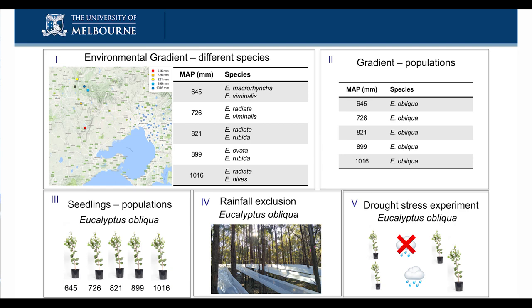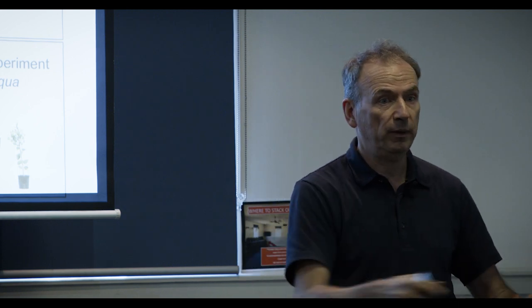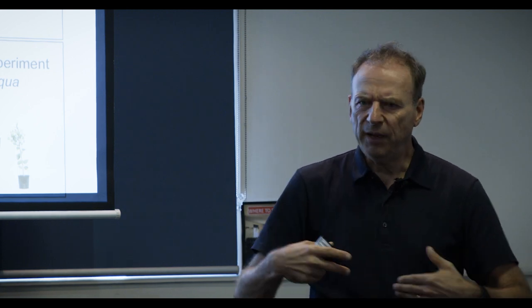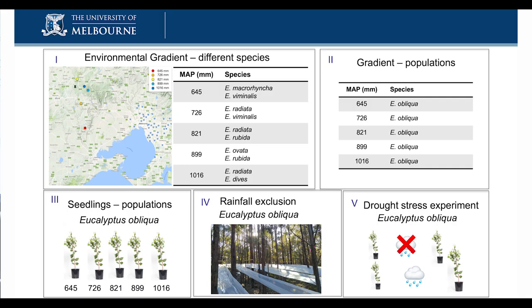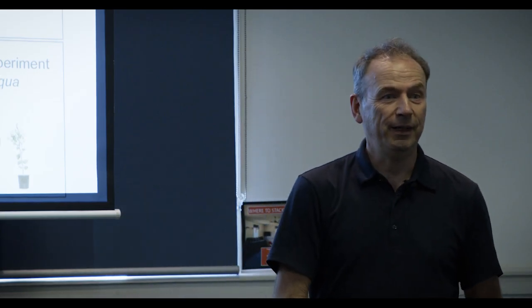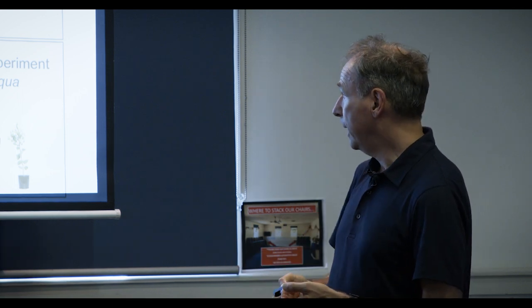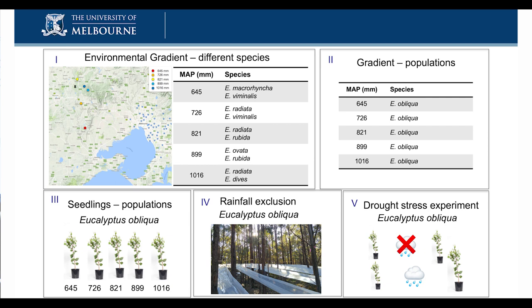We collected seeds from these trees in the wild, brought them back to the Burnley campus, and ran experiments there to see whether they behave the same way as trees out in the forest. We also set up a rainfall exclusion experiment at Leonard's Hill in a patch of regrowth forest, putting out gutters to intercept about 50% of the rainfall and really stress the trees in that little patch. And we did a drought stress experiment with Eucalyptus obliqua to see if we could teach the trees to become more drought tolerant.